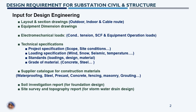The next input required for civil and structural design is equipment dimension drawings. These are generally provided by the supplier or manufacturer of equipment such as CVTV, circuit breaker, disconnector, surge arrestor, and post insulator. In a previous video, I explained what equipment is required for substation projects, so you can refer to that.